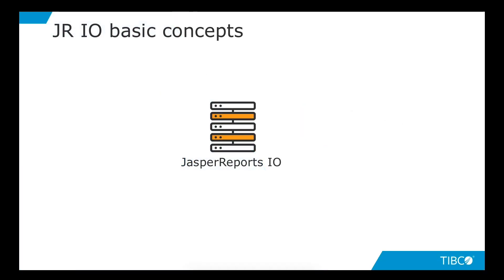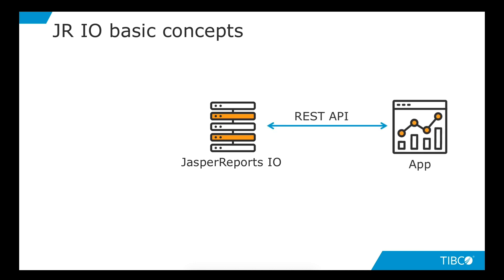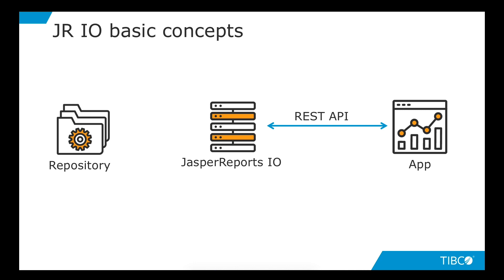It's a kind of microservice that exposes some APIs to let external applications execute reports. All the reports and assets executed through JasperReports.io reside in a repository. A repository could be just a folder, or it could be something that JasperReports connects to in an external environment — it could be an S3 bucket or a remote location.